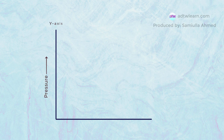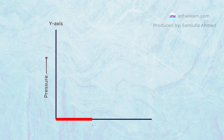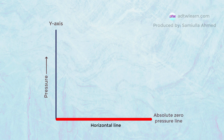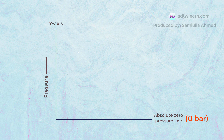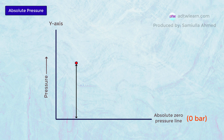This graph will show the pressure on the y-axis. As the y-line goes up, the pressure goes on increasing. This horizontal line represents absolute zero pressure — that is, zero bar, or no pressure at all. From this zero pressure line, if any pressure is measured, that pressure is called absolute pressure.